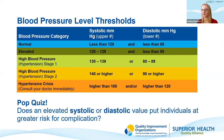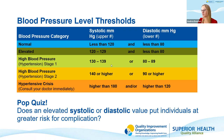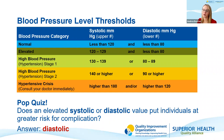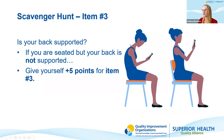Here's a quick pop quiz: does an elevated systolic or diastolic value put individuals at greater risk for complication? Feel free to put your answer in the chat box. The answer is diastolic. A high diastolic blood pressure indicates a greater risk for complications, especially for those over the age of 55. Great job, everyone. Scavenger hunt item number three: is your back supported? If you are seated but your back is not supported, give yourself five points for item number three.